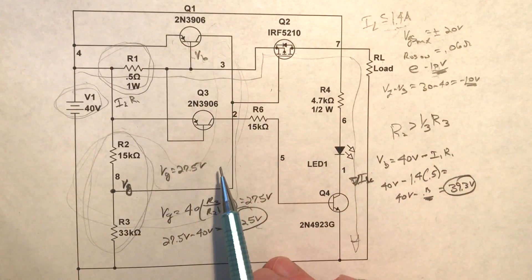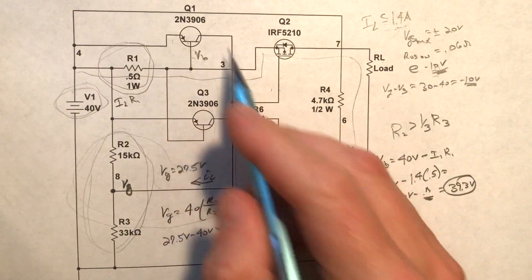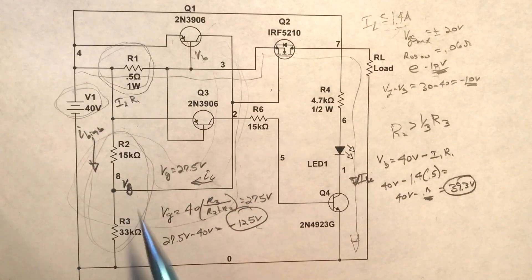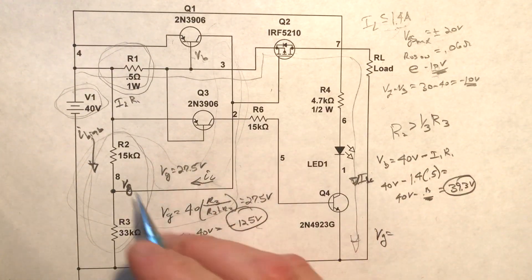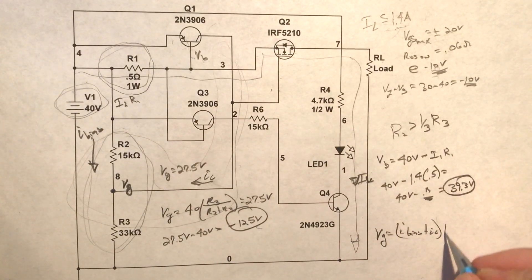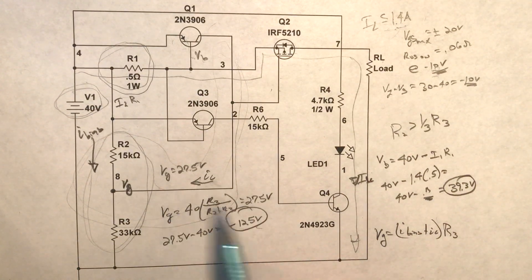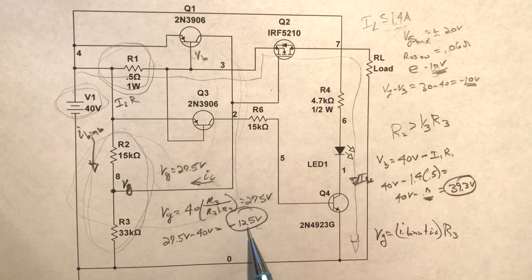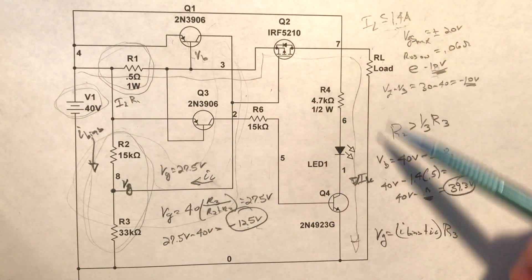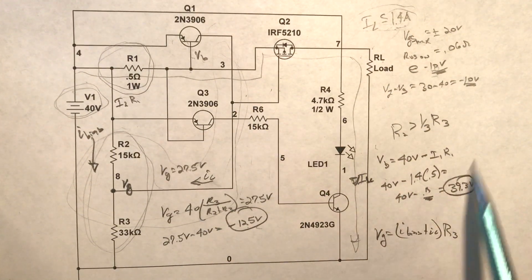All right, so the next thing we need to look at is as this guy starts to conduct what's actually happening. Well, as it starts to conduct we're obviously going to get some collector current flowing, we'll call I sub C. We already have some current flowing here, we'll just call this I bias. So V sub G here is going to be equal to I bias plus I sub C times in this case R sub 3, R3 33k. So obviously as our I sub C begins to increase, that's going to increase our V sub G. Well if our V sub G increases, then that's going to actually decrease our V sub GS. So if we decrease our V sub GS we in turn start to increase the resistance here which starts to decrease the voltage across our load which in turn is going to limit our current to 1.4 amps. And again, you can go to the website and see a little more detailed description of what's going on in here.